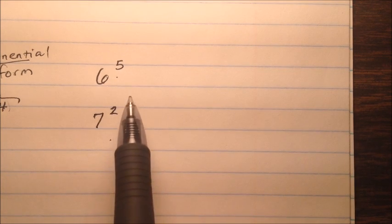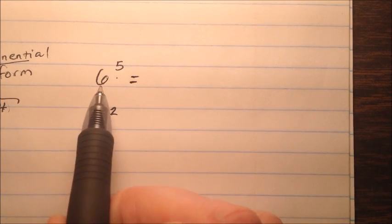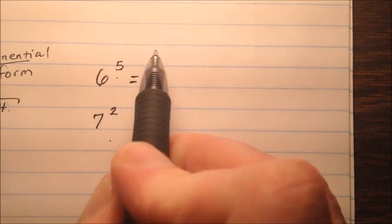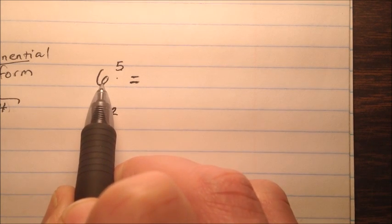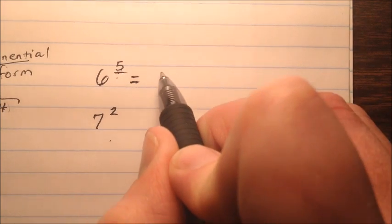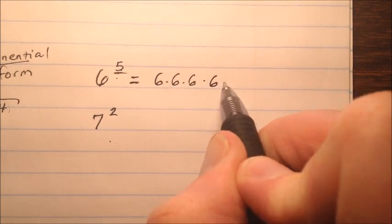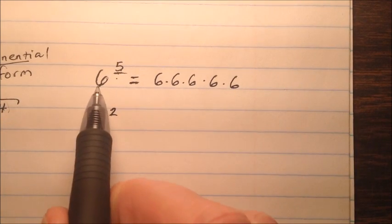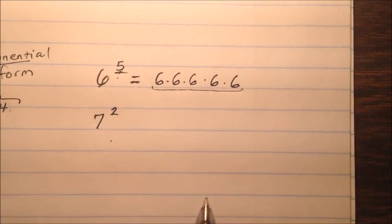In these next two examples, let's take terms in exponential form and write them in expanded form. This first one is six to the power of five, which means I'm going to be multiplying six over and over again — five times. So six to the power of five looks like six times six times six times six times six in expanded form.